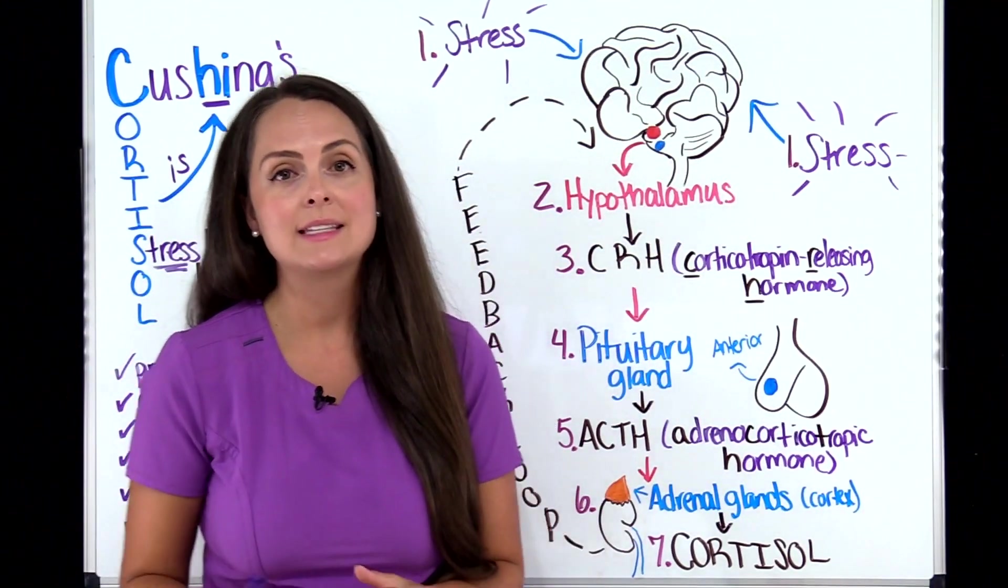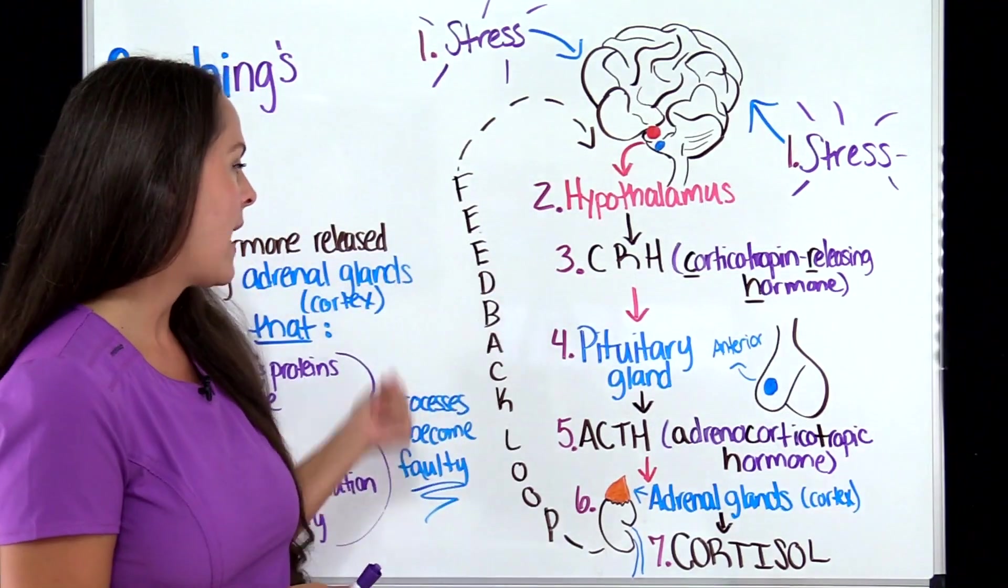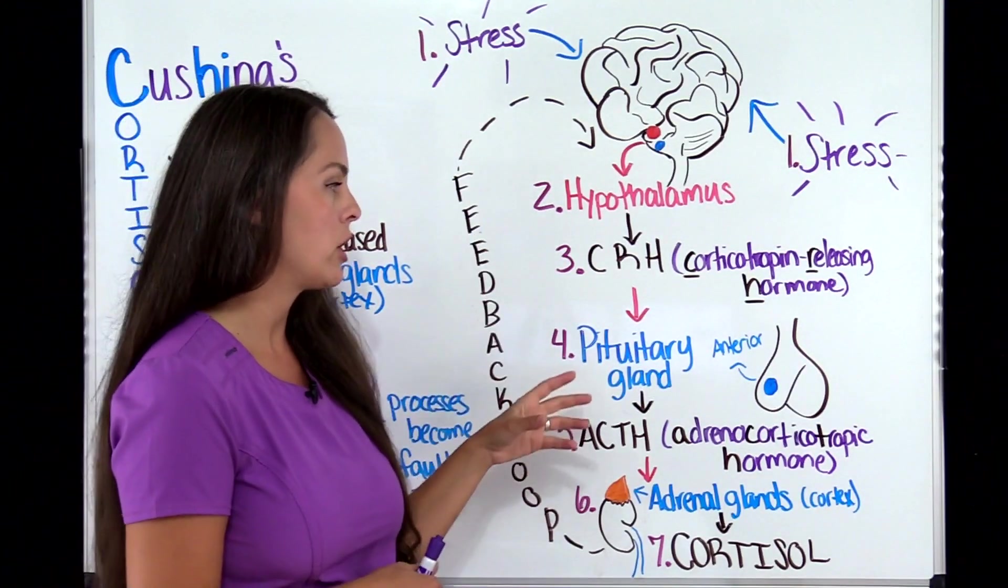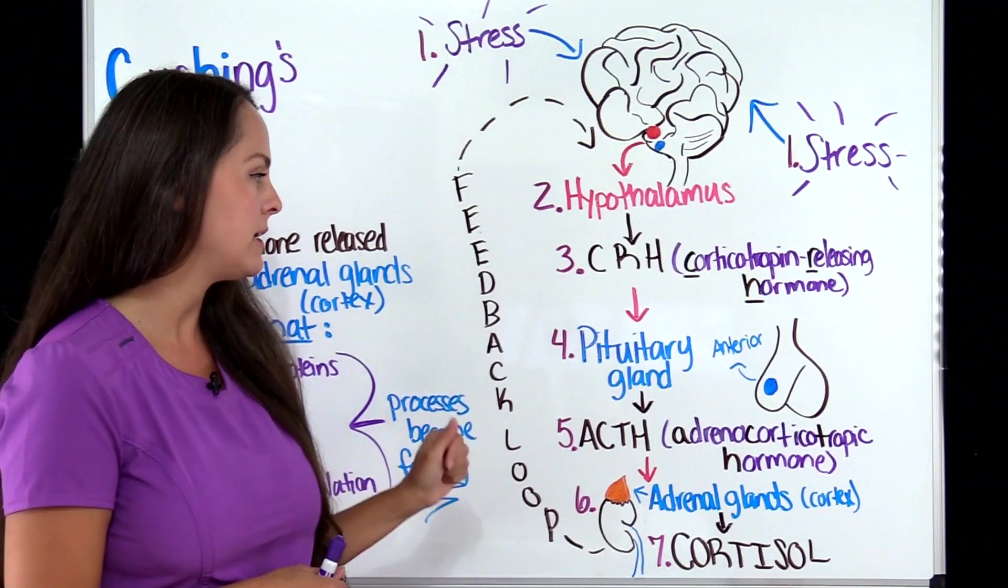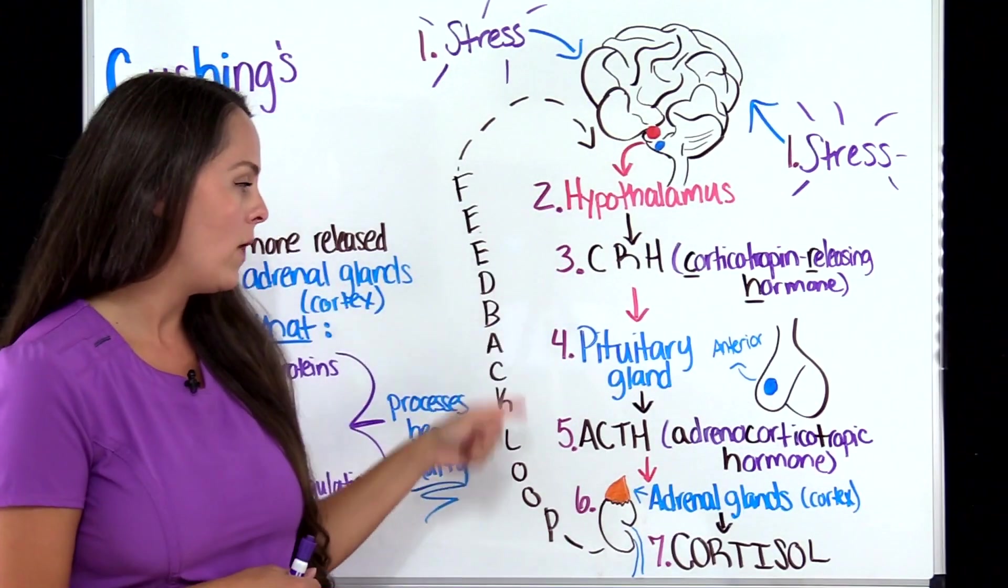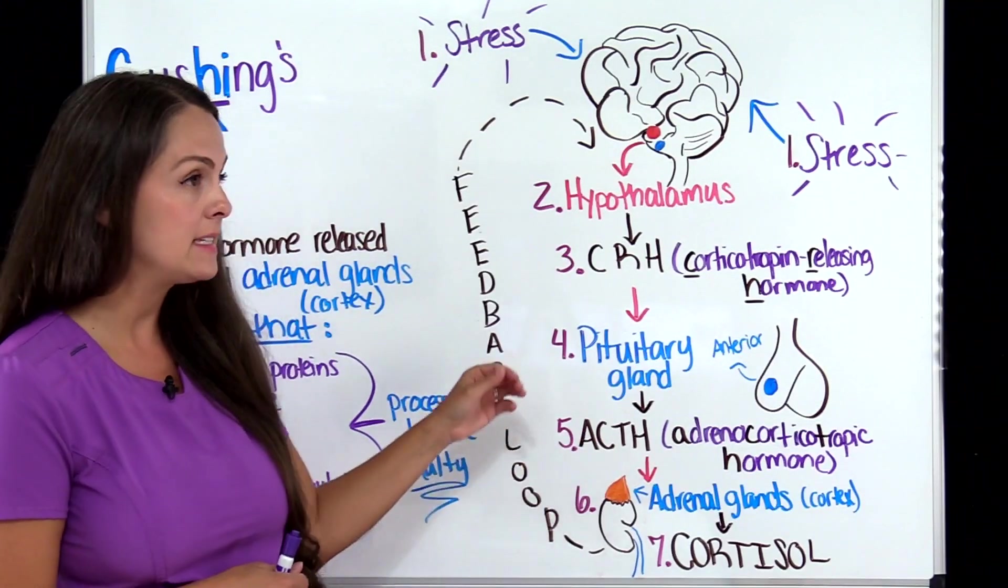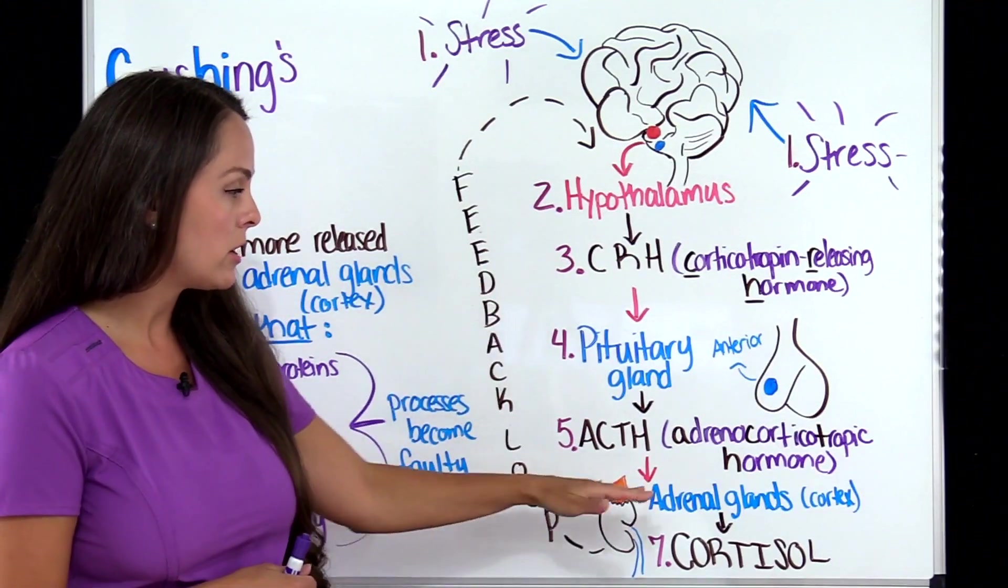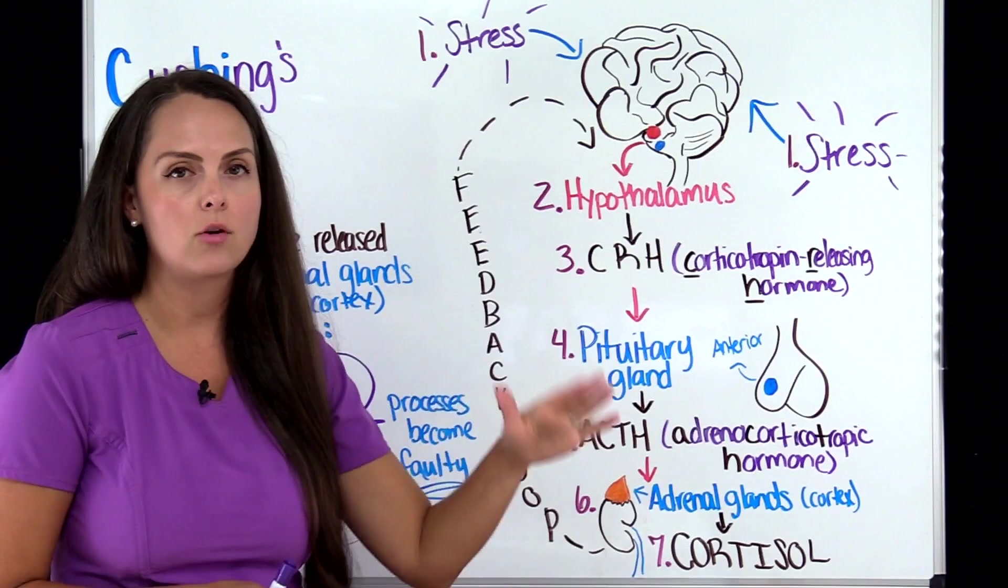However, this is not always the case. Unfortunately, in this feedback loop, we can have some faulty structures. For example, the pituitary gland can have tumors that's causing it to release way too much ACTH. If we have too much ACTH, that is going to cause our adrenal glands to just pump out that cortisol.